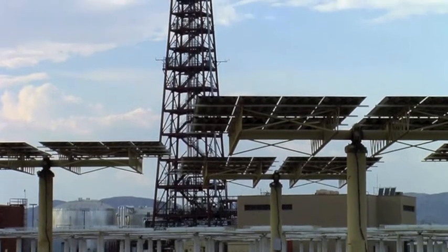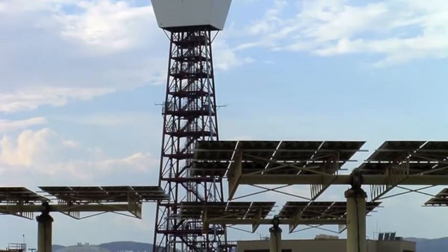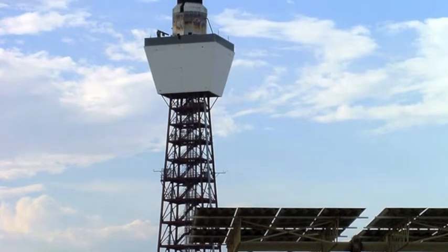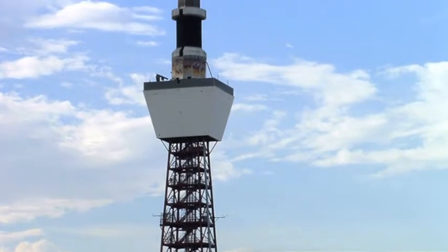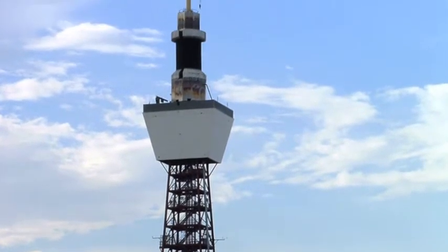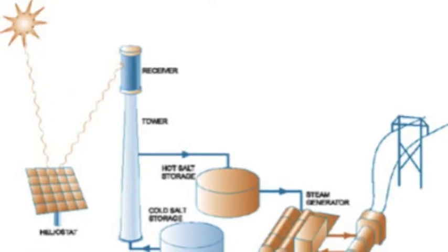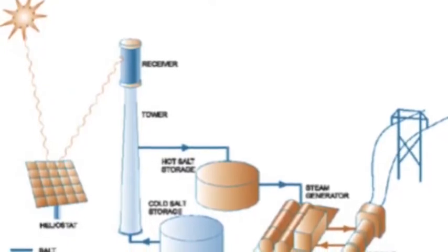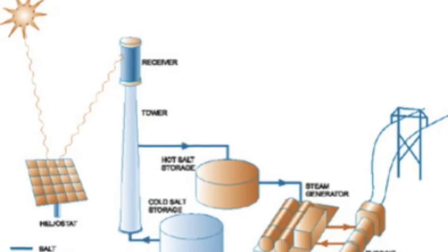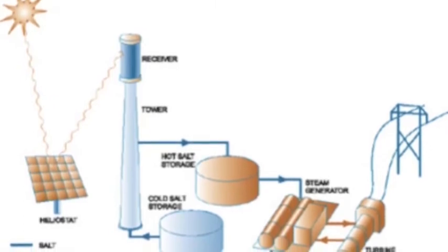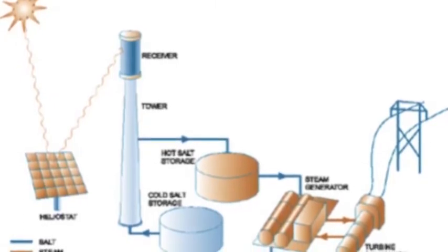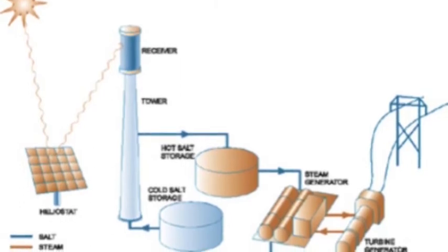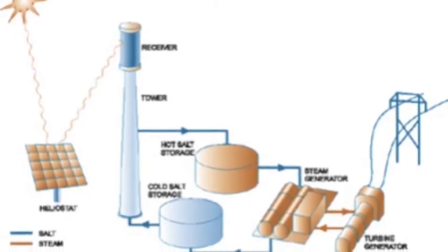Another system, called power tower designs, uses thousands of tracking mirrors called heliostats to absorb and concentrate the sun's thermal energy. The heliostats focus the sunlight on a receiver on top of the tower. Then, within the receiver, molten salt is heated to 1000 degrees Fahrenheit and is then pumped into a steam generator, where the steam fuels a standard turbine to generate electricity.